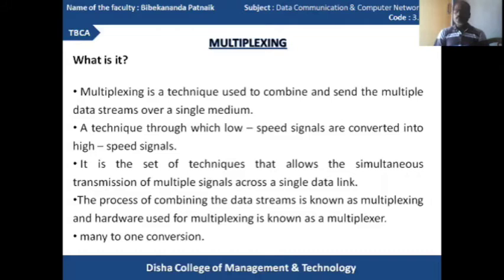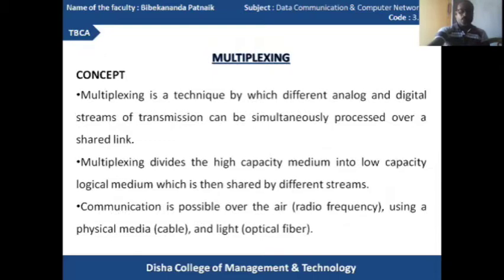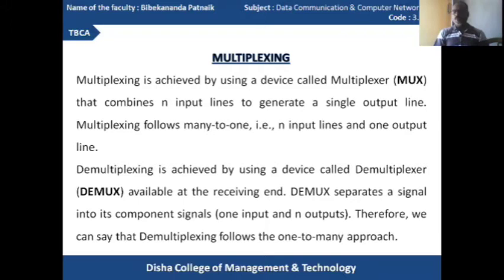The multiplexer is hardware which actually converts multiple signals into a single signal — that is, many-to-one conversion. Similarly, the multiplexer can communicate over a particular medium — that is, radio frequency, cable (physical media), or light signals related to optical fiber. This can be achieved using two components: mux (multiplexer) and demux (demultiplexer).